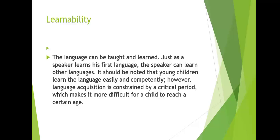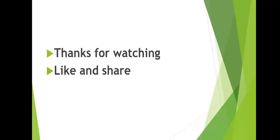The seventh feature is learnability. Language can be taught and learned. Just as a speaker learns their first language, they can also learn other languages. It should be noted that young children learn language easily and competently. However, language acquisition is constrained by a critical period, which makes it more difficult to learn a language after a certain age.